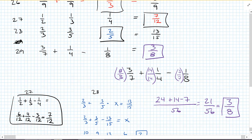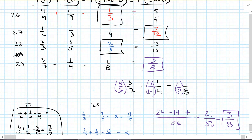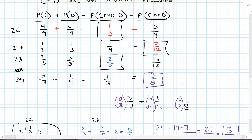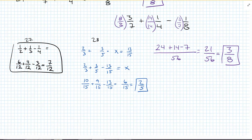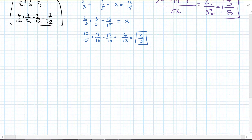When events are not mutually exclusive, remember you're going to do the probability of the first plus the probability of the second minus the probability of both.